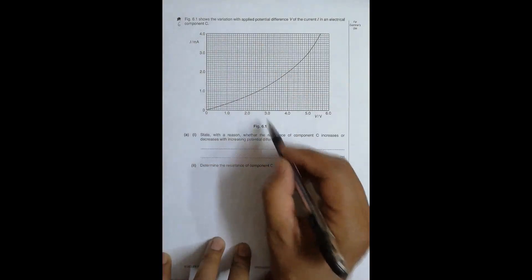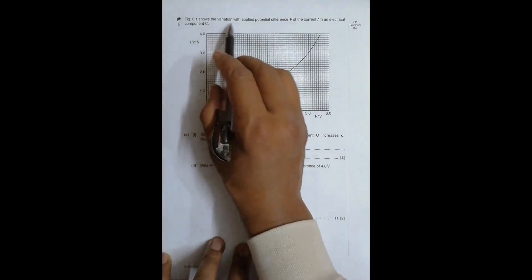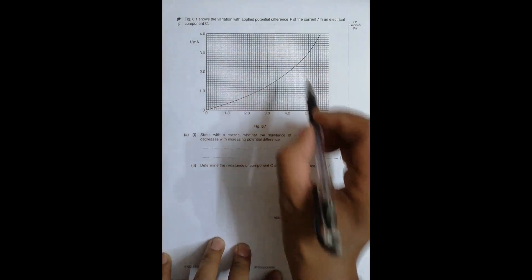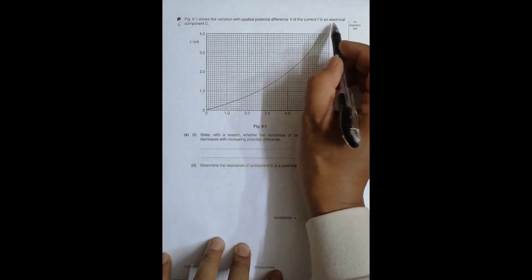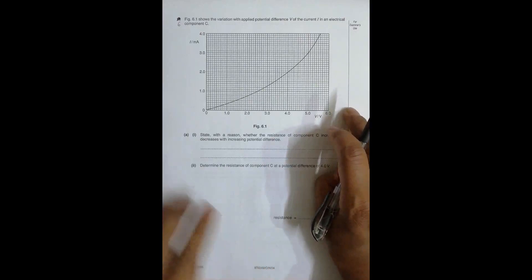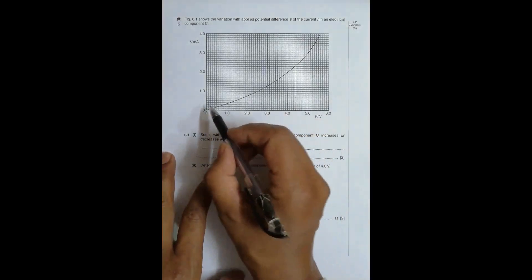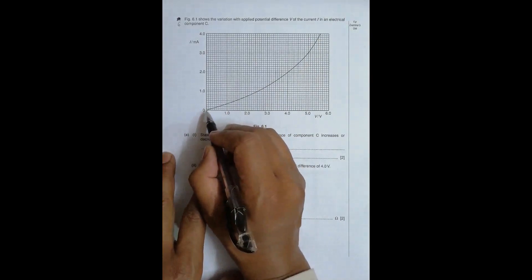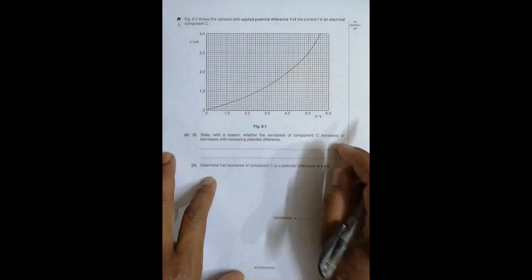Figure 6.1 shows the variation with applied potential difference V of the current I in an electrical component C. You can see that the current increases more rapidly as V goes on increasing — initially the increase is less rapid, then it is more rapid.